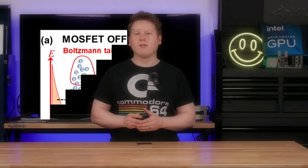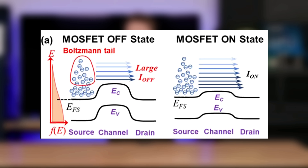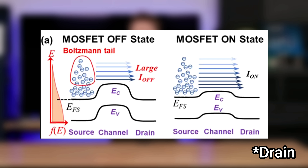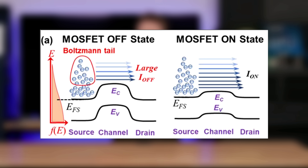One way to represent this electron transport is an energy diagram. In this diagram, the lines indicate the energy level of the electrons. The energy level is more of a spectrum than a line, and in order to move from source to drain, you have to give the electrons more energy or reduce the energy requirement to move through what we call the channel. In the case of a MOSFET, we reduce the energy barrier of the channel.